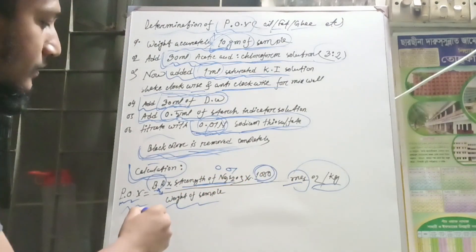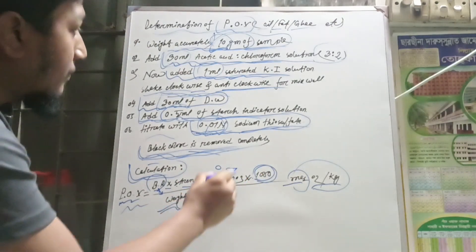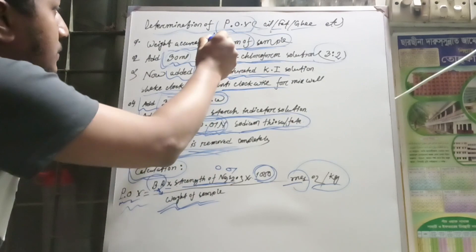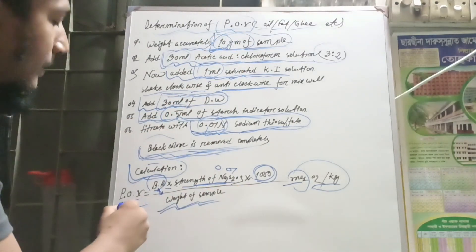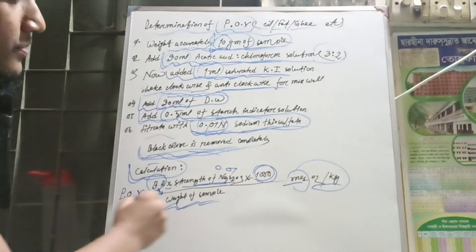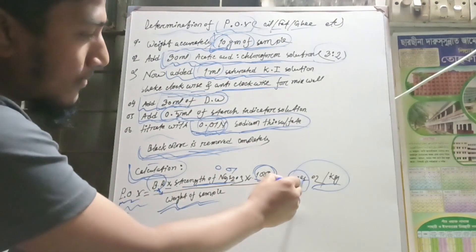1000 divided by weight of sample in grams. We use this titration for the peroxide value. This is the equivalent of the oxygen.